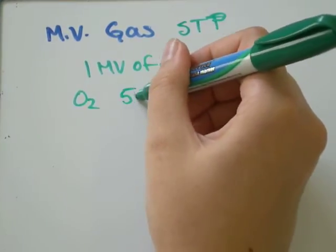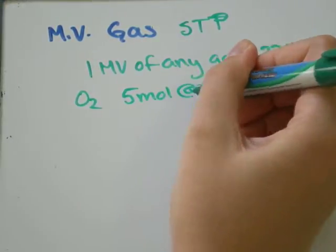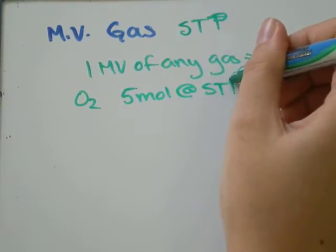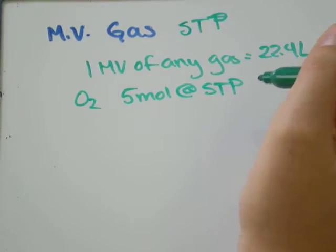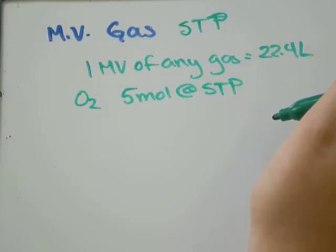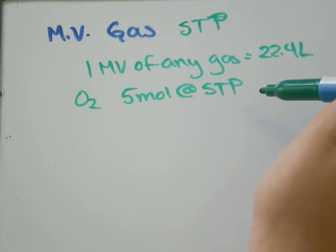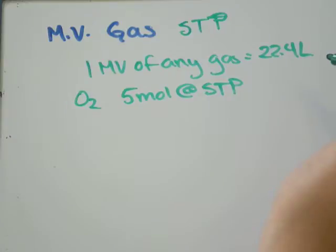If we have 5 moles of O2 at STP, and we want to know the amount of liters that that will occupy. So, one mole will occupy 22.4 liters. How many liters will 5 moles occupy?